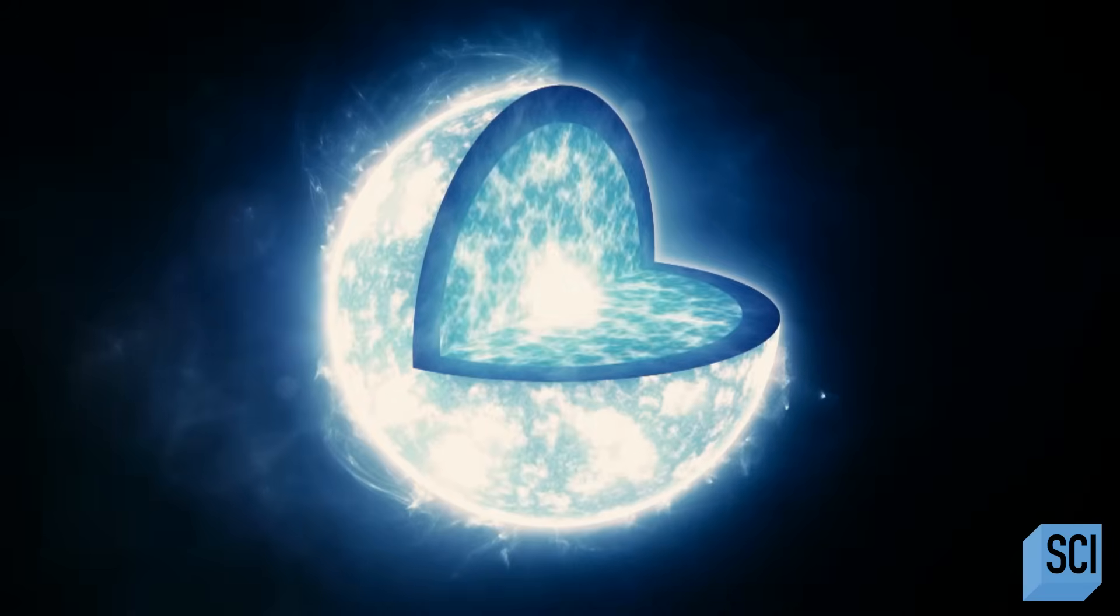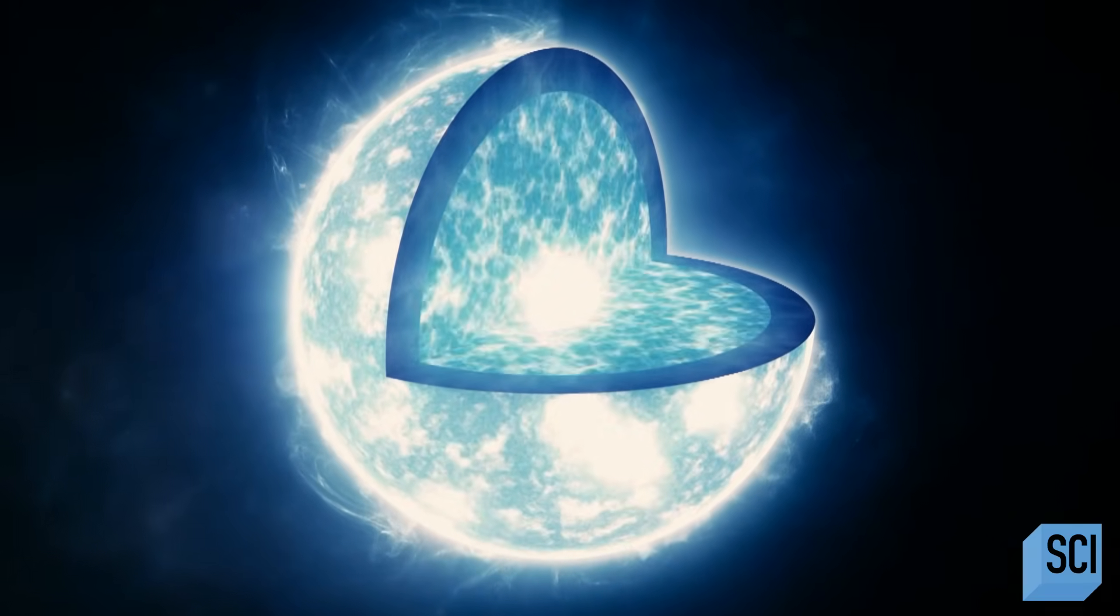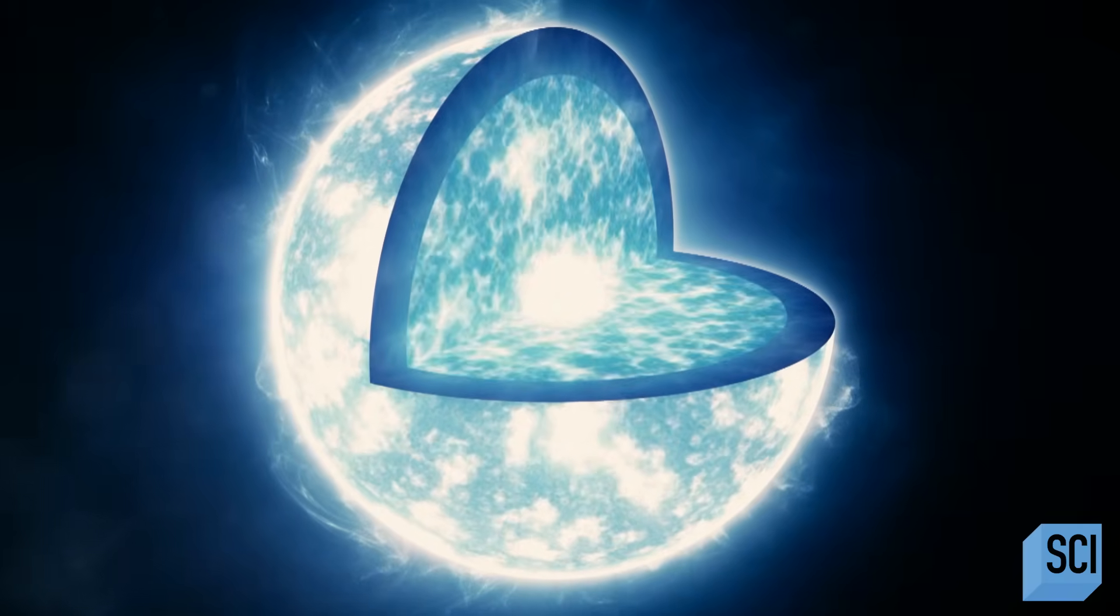Beneath the thin atmosphere lies a surface of dense helium around 30 miles thick. It surrounds an interior made of superheated liquid carbon and oxygen. A white dwarf at its surface can be a half a million degrees. It's even hotter in the interior. And so that kind of material, it's not going to behave the way normal matter does.